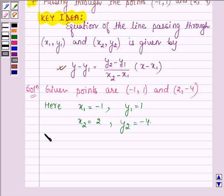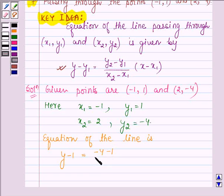Thus, the equation of the line is given by y - y₁ equals (y₂ - y₁)/(x₂ - x₁) times (x - x₁). Substituting the values: y - 1 = (-4 - 1)/(2 - (-1)) times (x - (-1)), which is y - 1 = (-5/3)(x + 1).